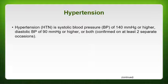Normal blood pressure should have a systolic below 120 and a diastolic below 80. You also have what's called pre-hypertension, which is a systolic of 120 to 139 or a diastolic between 80 and 89. Stage one hypertension uses the numbers just given, and stage two hypertension would be a systolic greater than or equal to 160 or a diastolic greater than or equal to 100. Those are your different levels.